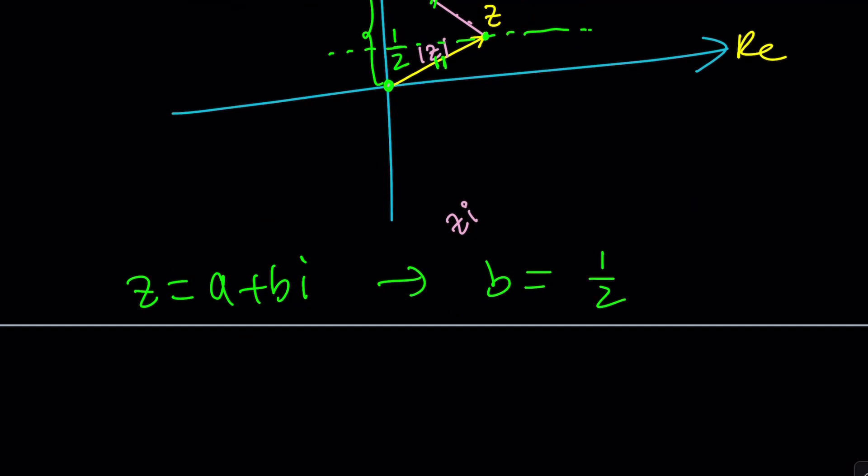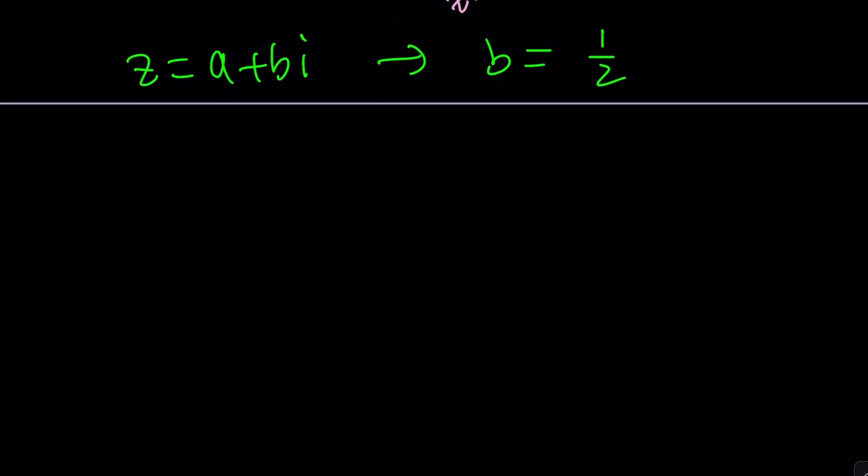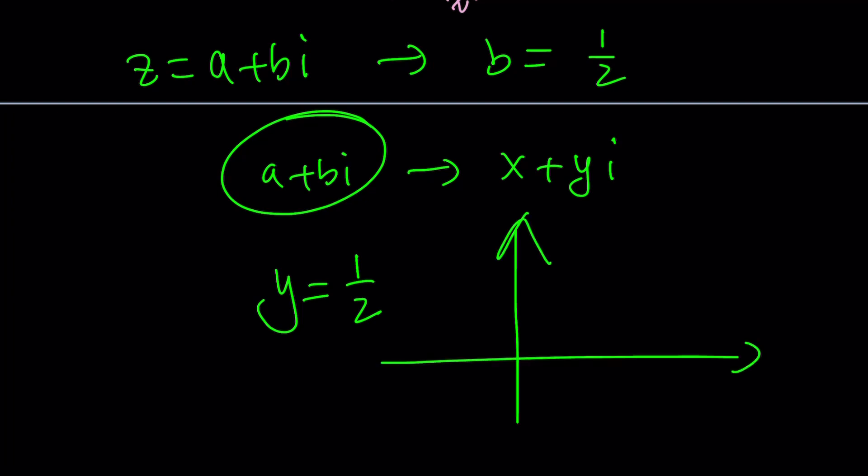Yay! And obviously, on the coordinate system, you can graph it if you just replace A plus B I with X plus Y I. Then you're going to get Y equals 1 half as our locus. And that just indicates a horizontal line, as you know, that goes through Y equals 1 half. And any number, any number Z on this line is going to be a solution to our equation. The absolute value of Z minus I equals the absolute value of ZI. And this brings us to the end of this video.